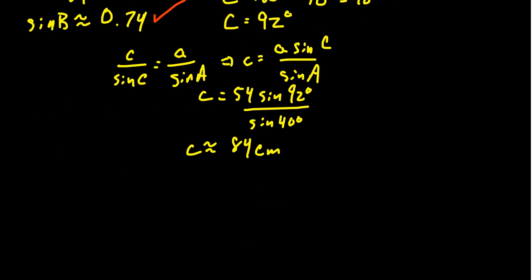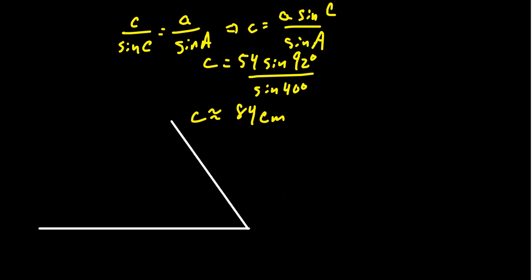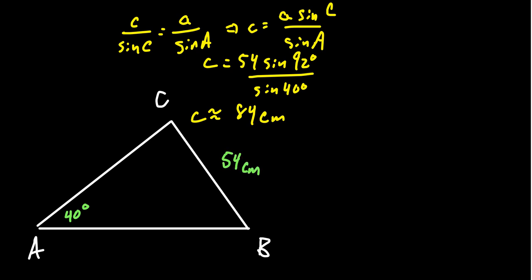So the remaining side is 84 centimeters — that's one possible triangle. I'll sketch it here so we can compare it with the second solution. We have triangle ABC with angle A = 40°, side a = 54 cm, side b = 62 cm (shown in green as the original given information), and we discovered angle B = 48°, angle C = 92°, and side c = 84 cm.